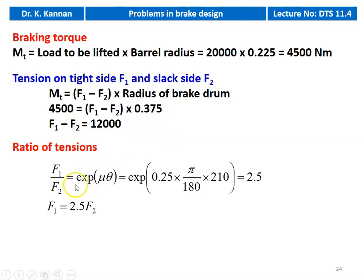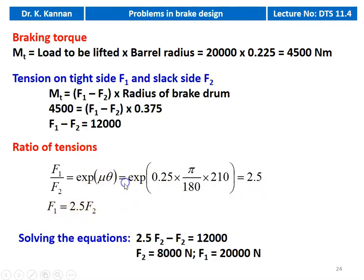The ratio of tension F1 by F2 equals e to the power mu theta, which is exponential of mu theta. Exponential of mu equal to 0.25, theta in radians is pi by 180 into 210 equal to 2.5. So from this equation F1 equals 2.5 F2. Substituting: 2.5 F2 minus F2 equal to 12,000, giving F2 equal to 8,000 Newton and F1 equal to 20,000 Newton.